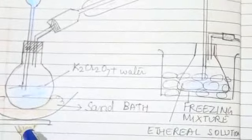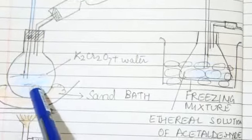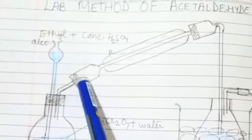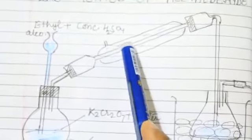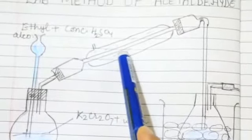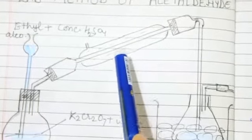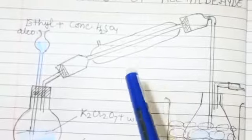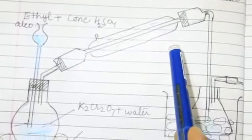When we give heat to it, it changes into gas. The gas through delivery tube goes to condenser. This is the condenser. Condenser works by changing vapor into water droplets.